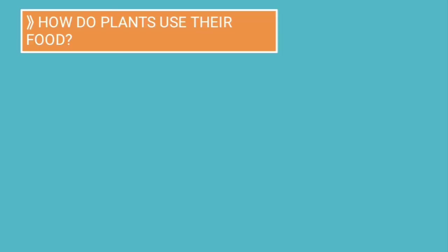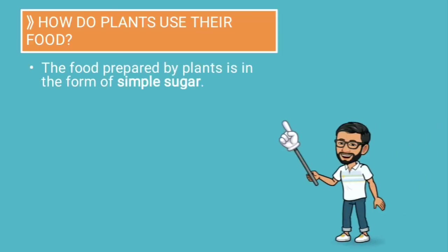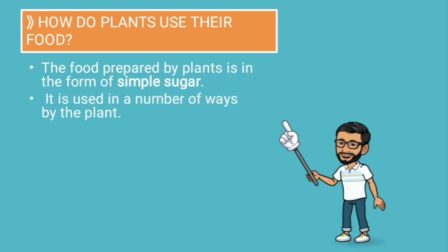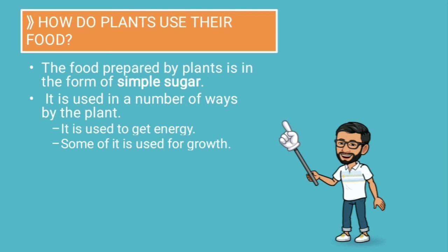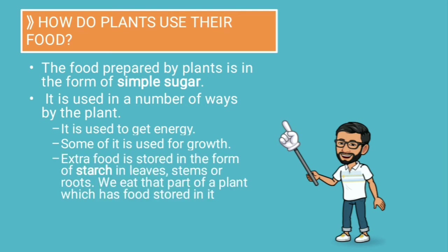How do plants use their food? The food prepared by the plant is in the form of simple sugar. It is used in a number of different ways by plants: it is used to get energy, some of it is used for growth, and extra food is stored in the form of starch.